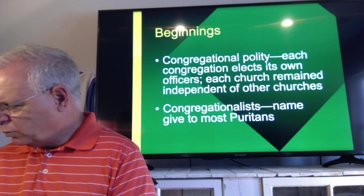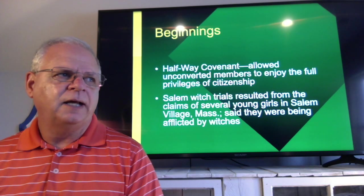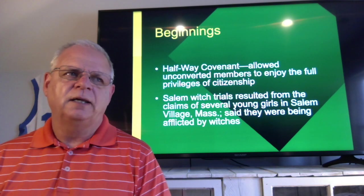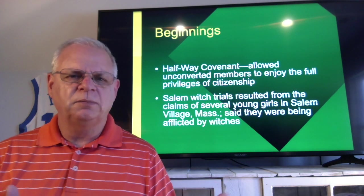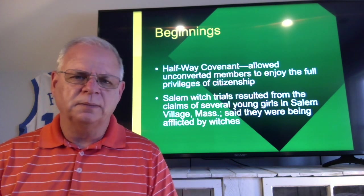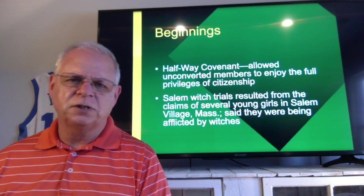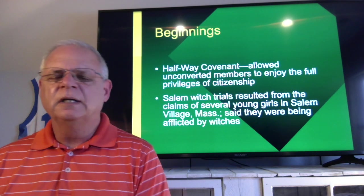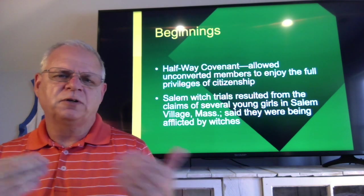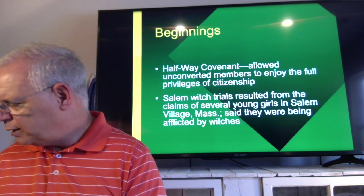Over time, the Puritans suffered difficulties in their own church. As newer generations were born, they were less committed to the teachings of the church. In the Puritan colonies, you had to be part of the church to be a voting member in government — limited to men who owned property. So they came up with the halfway covenant, which allowed unconverted members to enjoy the full privileges of citizenship and vote. But this brought unconverted members into the church, watering down beliefs and creating its own problems.